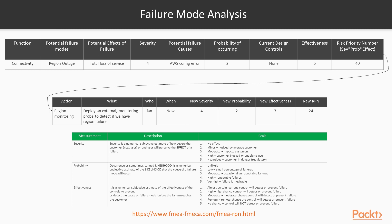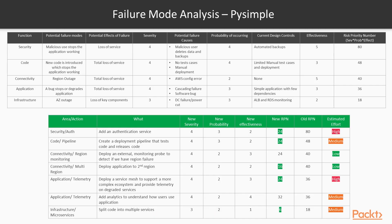Now let's look at what I've done for PySimple. I've ranked all the items already. Our top priority, with a score of 80, is a security function — the app stops working because somebody has done something malicious, such as deleting data and backups. There's no security in place at all on our PySimple application, so the probability of something happening if you put it on the web is quite high. There are some automated backups, but those could potentially be deleted too. So effectiveness is five, giving us a whopping score of 80.